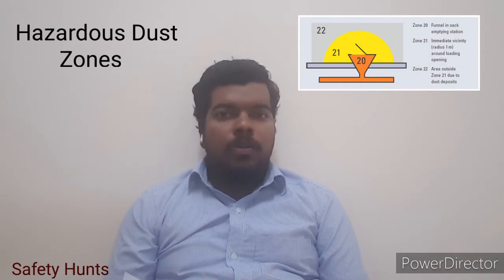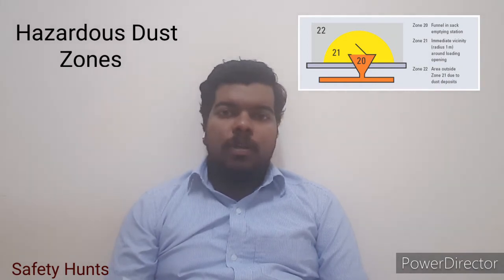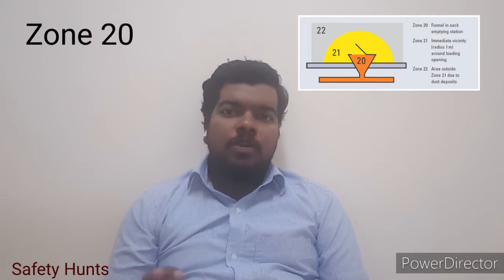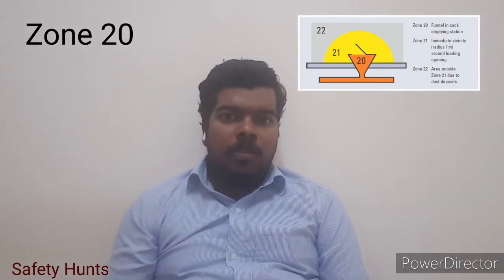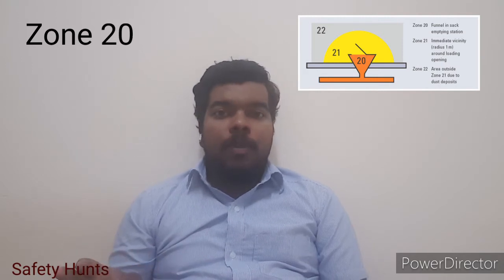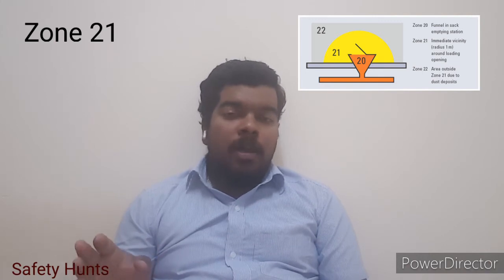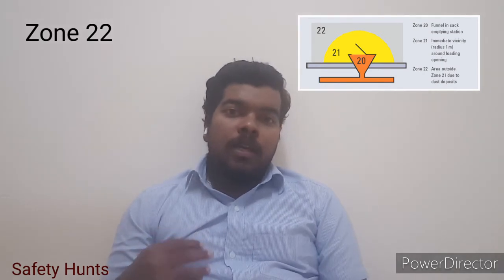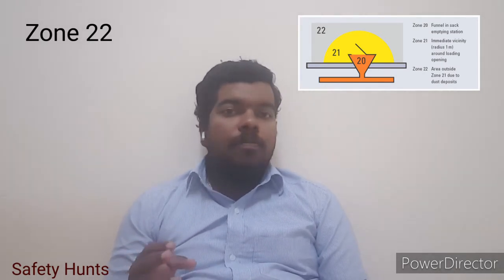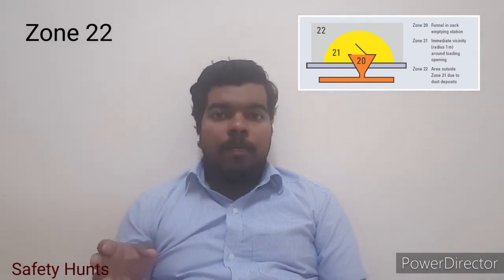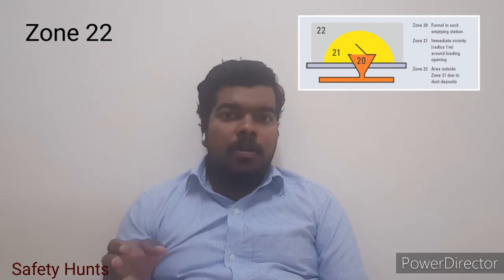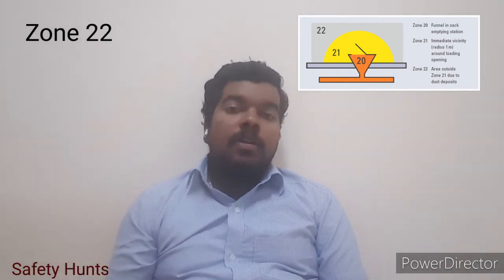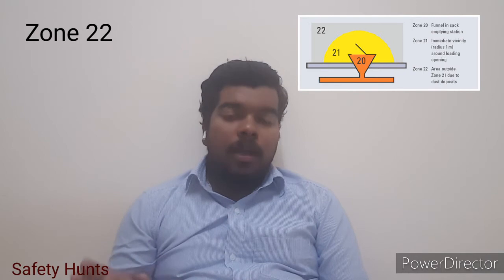Let's see what is hazardous dust area. Dust area is classified into Zone 20, Zone 21, and Zone 22. Zone 20 is a presence of flammable and explosive dust for a continuous period of time. Zone 21 is where flammable and combustible dust may likely be present. Zone 22 is an area where, under normal operation condition, the presence of flammable and combustible dust will not be there, but if there is any maintenance or operation maintenance going on, there will definitely be a presence of flammable and combustible dust.